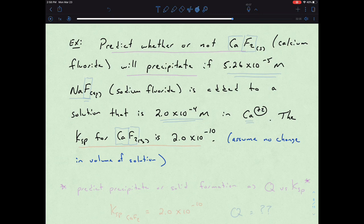So again, the first idea here is to relate what type of question are we looking at. And we see this notion of predict whether or not a certain solid, calcium fluoride, will precipitate. So we have this idea of predict a precipitate or solid formation. And so that notion of predicting whether a solid will form or not, that's this relationship of Q versus Ksp.